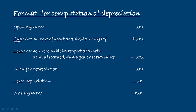That is the asset sale. Discard — that is the scrap value, that is the less value. So this is the depreciation of WDV. This is the WDV, this is the depreciation charge, so the asset is at the rate. This is the closing WDV.